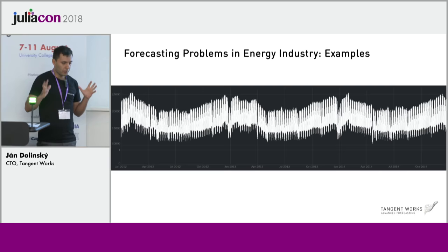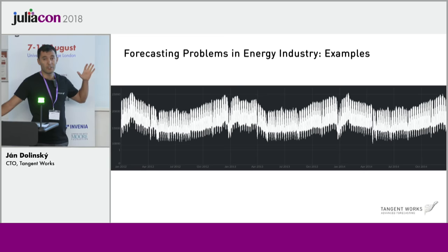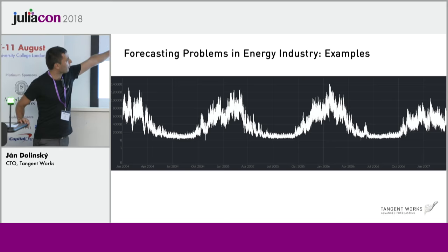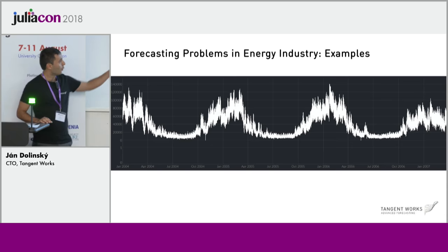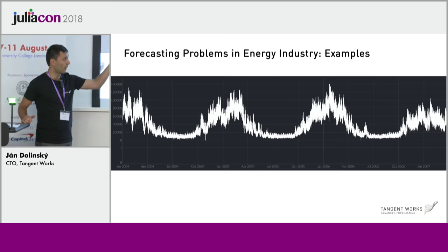To give you an idea of how diverse these time series can be: here is electricity consumption over three years of a larger European city. Then a larger European city but for gas — you can see the difference. The bottoms represent summer periods when you're not consuming gas much, whereas the peaks are heating periods when in winter you're using gas to heat your households. Then these are electricity prices from the United States over three years — again the time series looks different, with some spikes.